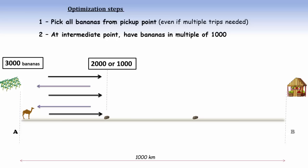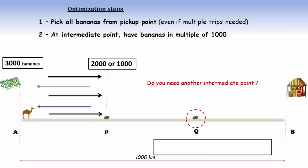Let's name the source and destination as A and B and the intermediate point as P. Now the question arises, do we need another intermediate point Q? We must justify whether or not we need a second intermediate point. The purpose of an intermediate drop point is to make short trips so that you can transfer more number of bananas to the next point.